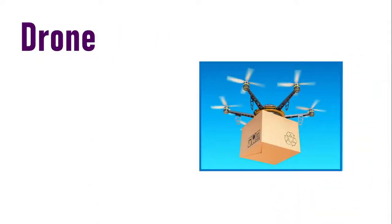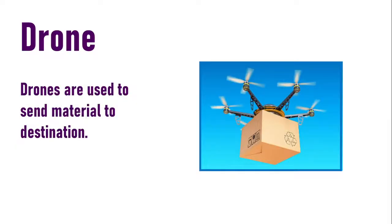Drone. Drones can be used to take a parcel or material to a destination, and they can be controlled via computers — therefore they perform output operations. You set the destination in the system, it controls the drone, and the drone takes the material to that location. Therefore a drone is also a type of output device.